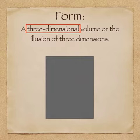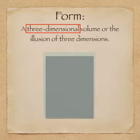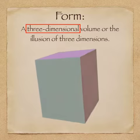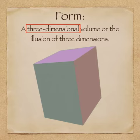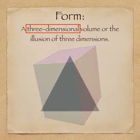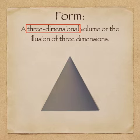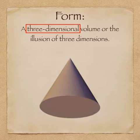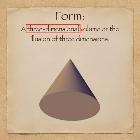The three-dimensional version of a rectangle doesn't have to transform into a cylinder. It could also transform into a box. Notice how the box also gets the third dimension of depth added to it. The three-dimensional version of a triangle could be a pyramid or a cone. Again, notice the third dimension: depth.